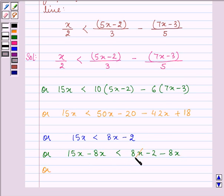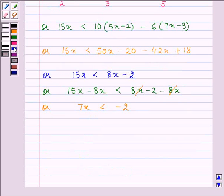On simplifying we have 7x is less than minus 2. Dividing both the sides by a positive number that is 7 we have 7x divided by 7 is less than minus 2 divided by 7. That gives us the solution as x is less than minus 2 divided by 7.